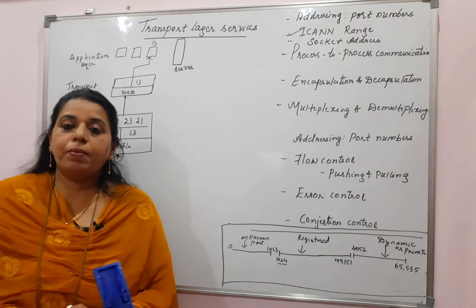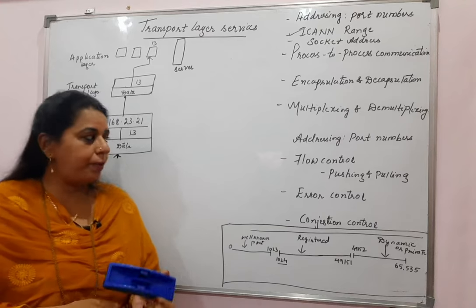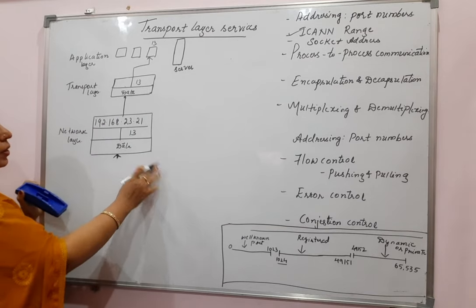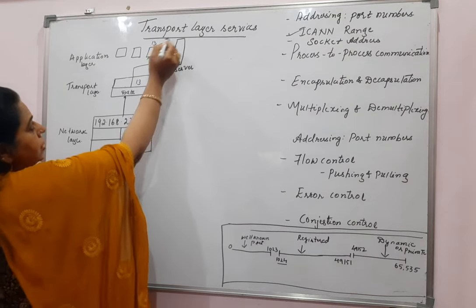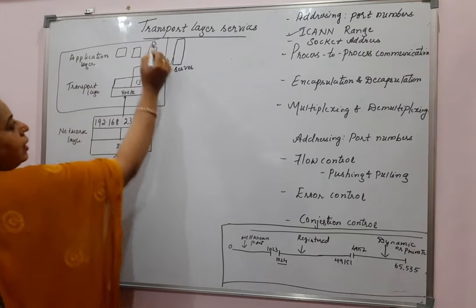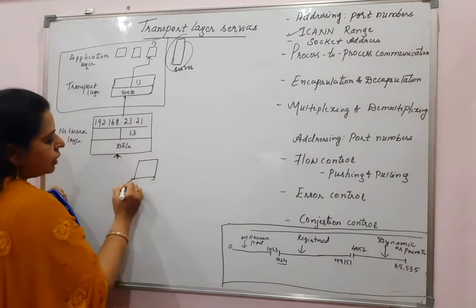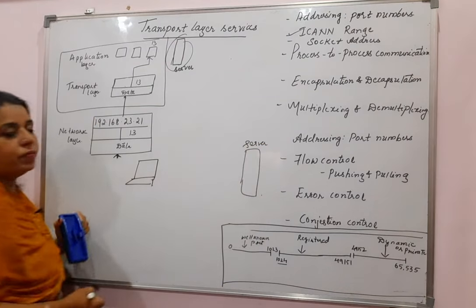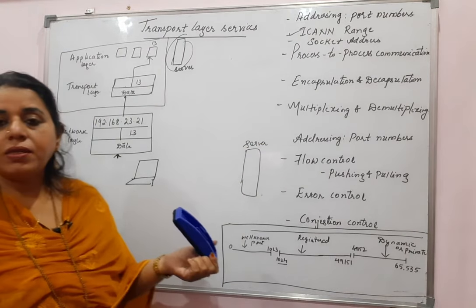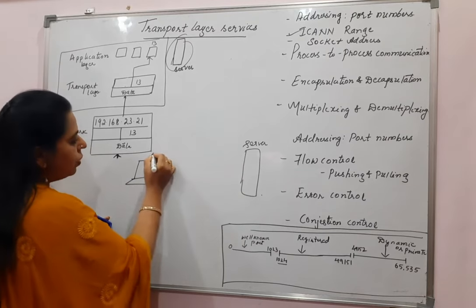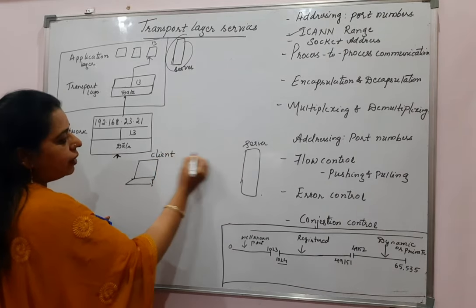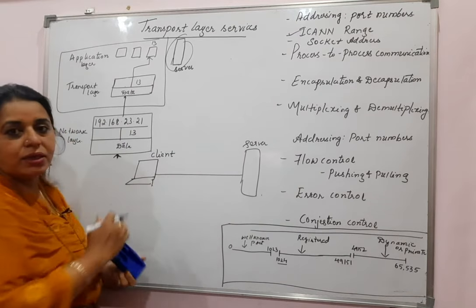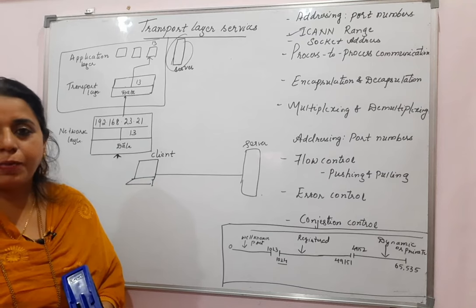Why do we require a port number? The port number always identifies the process at the application layer. The transport layer functions for the client-server paradigm. The source host becomes the client and the destination becomes the server. There is a logical connection established between the client and the server at the transport layer. The client collects the message from the process running at the application layer and sends that message to the server.